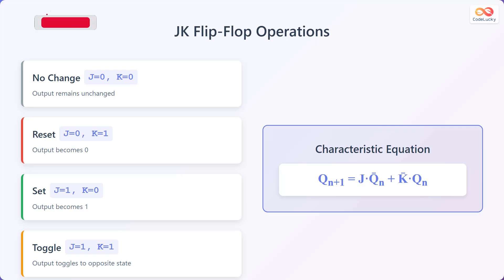Let's examine the different modes of operation of a JK flip-flop. When J equals 0 and K equals 0, the no change mode is activated, where the output remains unchanged. When J equals 0 and K equals 1, the flip-flop goes into reset mode, forcing the output to become 0. When J equals 1 and K equals 0, the set mode is enabled, and the output is set to 1.